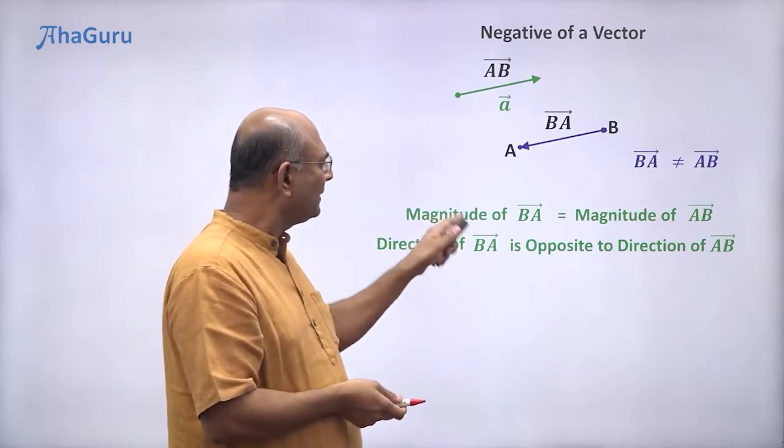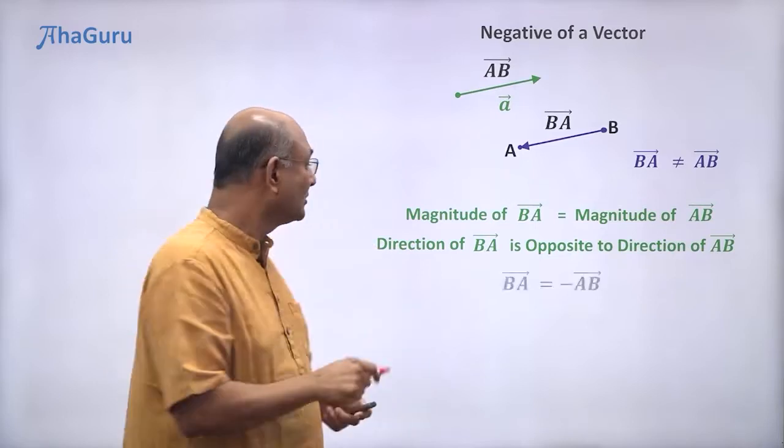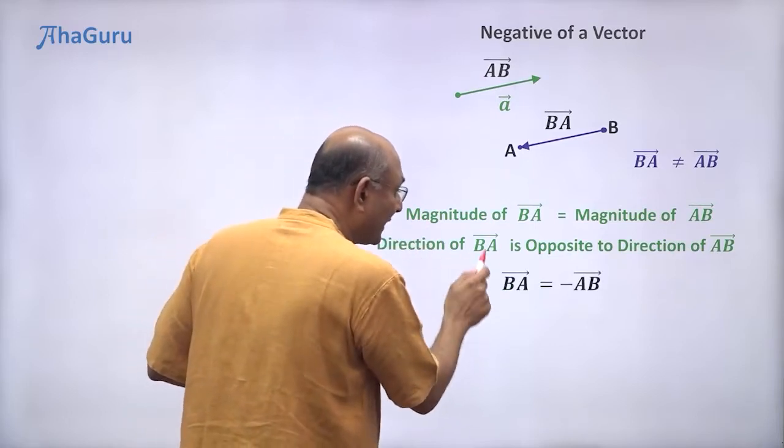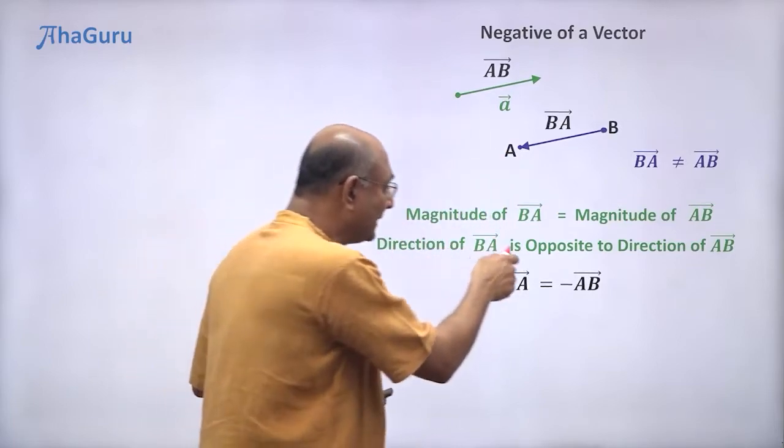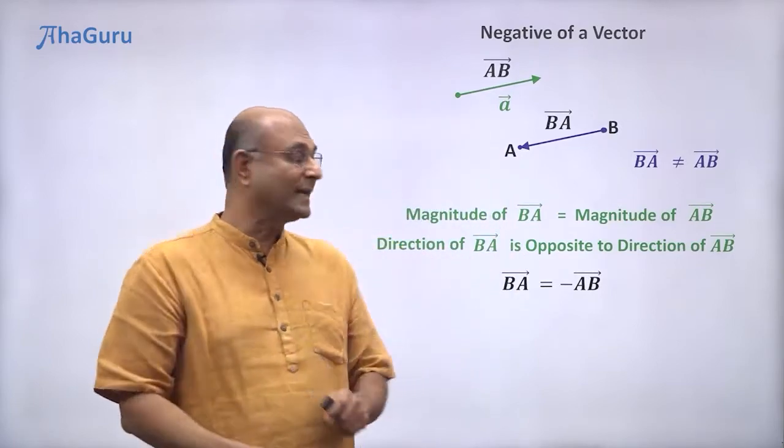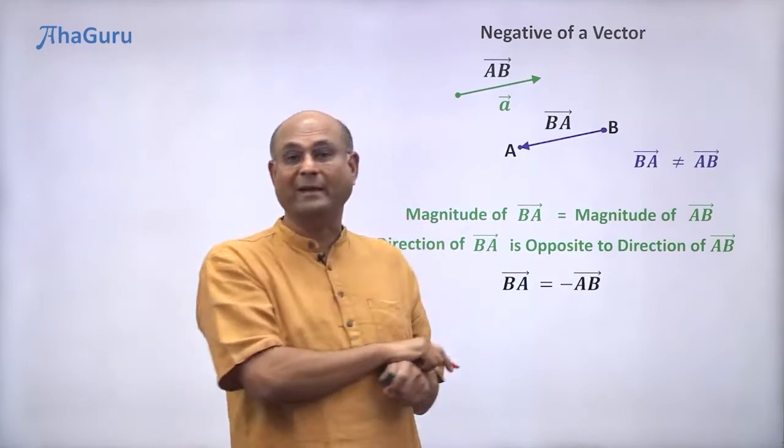So we must have a way of writing this. How do we write opposite? We use minus. So we can say BA vector is minus of AB vector. So what is the meaning of minus? It says that BA vector is opposite to AB vector.